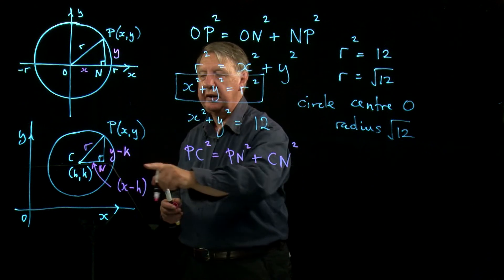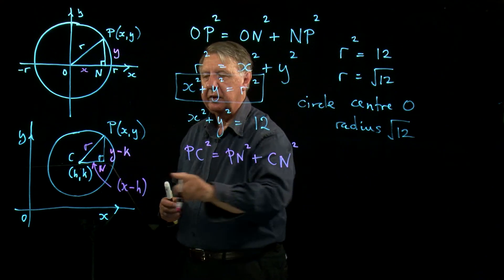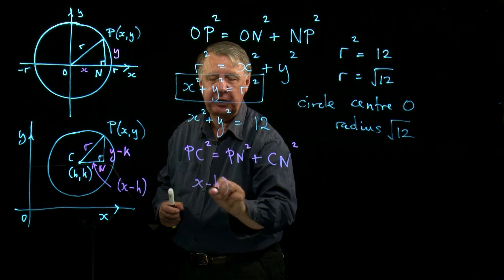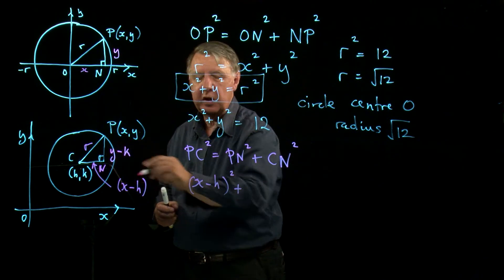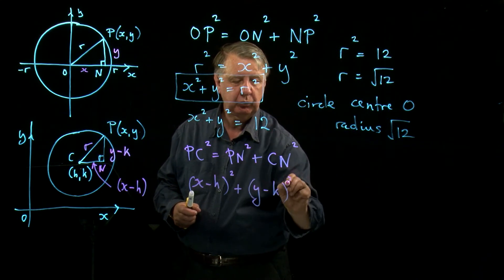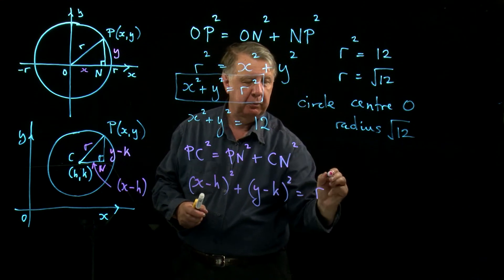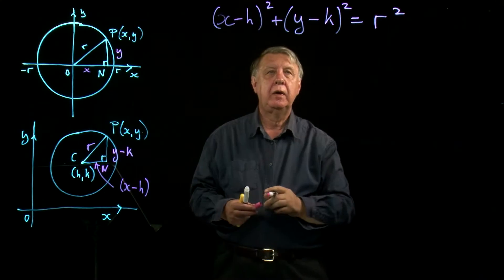PN is, well let's put CN first because normally we would do that. So CN is X minus H, so X minus H squared plus PN is Y minus K squared equals R squared.